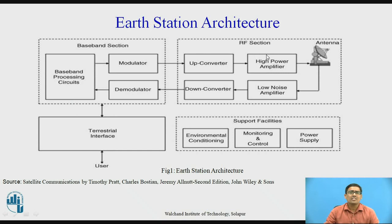In the RF section, there are two parts: uplink and downlink. For the uplink, it consists of an upconverter, a high power amplifier, and an antenna consisting of a transmitter as well as a receiver. In the downlink, it consists of the receiver part of the antenna, a low noise amplifier, and the downconverter. The support facilities include environmental conditioning, monitoring and control of the satellite, and the power supply for the Earth Station.